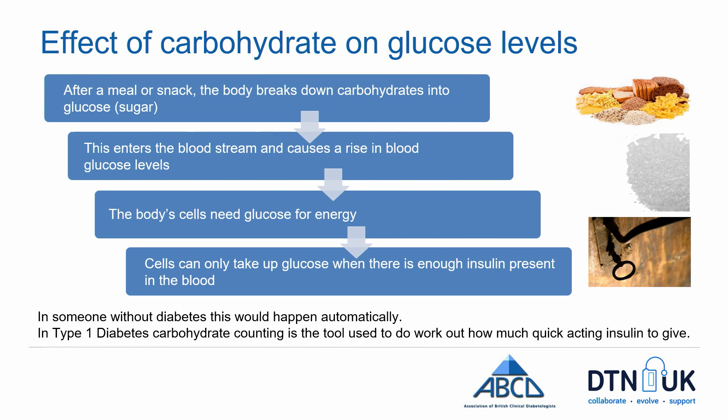We often refer to insulin as acting like a key to unlock the cell door and let glucose in. In someone without diabetes this process happens automatically — the pancreas produces the right amount of insulin in response to the carbohydrate eaten to keep glucose levels within a very tight range. However, in someone with type 1 diabetes it is possible to take insulin in a way that lets you choose what and when you want to eat, by taking quick-acting insulin based on the carbohydrate you are eating. This process is called carbohydrate counting.